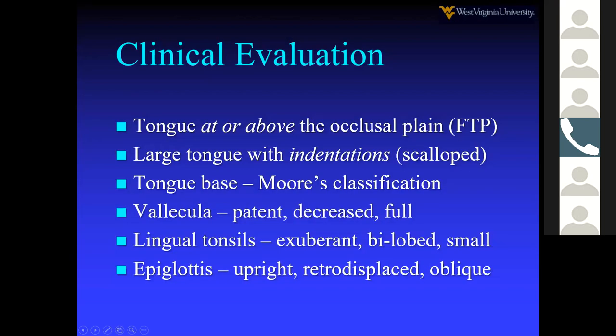On clinical exam, assess whether the tongue is at or above the occlusal plane using the Friedman tongue position. Large tongue indentations from the teeth indicate the tongue is larger than what the jaw can hold. Evaluate the tongue base airway with the Moore classification, and assess the vallecula — the space between the tongue base and epiglottis — noting whether it is patent, decreased, or full. Comment on lingual tonsil size and epiglottis position relative to the tongue base and posterior pharyngeal wall.